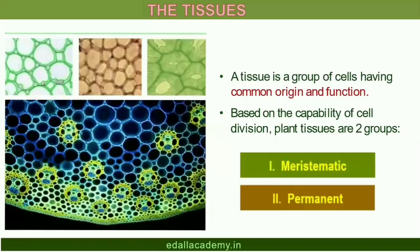6.1 The Tissues. A tissue is a group of cells having a common origin and usually performing a common function. A plant is made up of different kinds of tissues. Tissues are classified into two main groups: meristematic and permanent tissues, based on whether the cells being formed are capable of dividing or not.